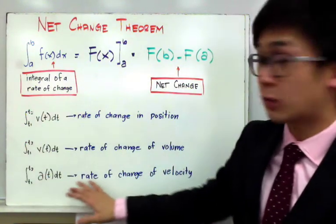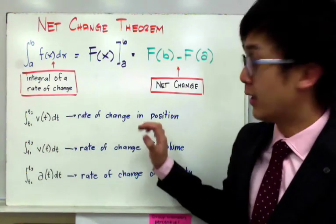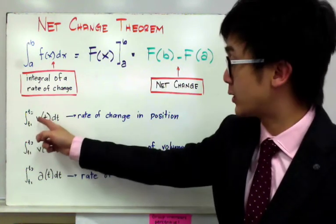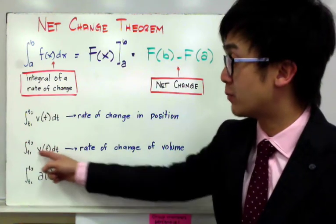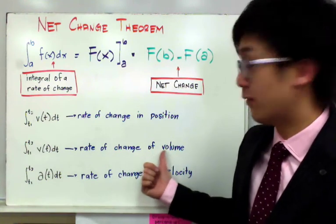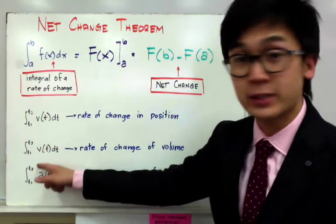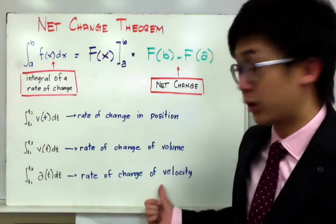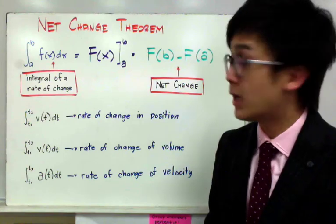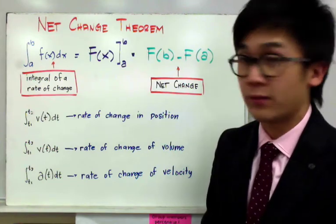Here are some notations we will use in word problems with the Net Change Theorem. We have the rate of change in position given by v(t) dt from t1 to t2. The integral of v(t) dt from t1 to t2 is also used to denote the rate of change of volume. And a(t) dt from t1 to t2 represents the rate of change of velocity. We will use velocity in our problems to find displacement, rate of change, and net change.